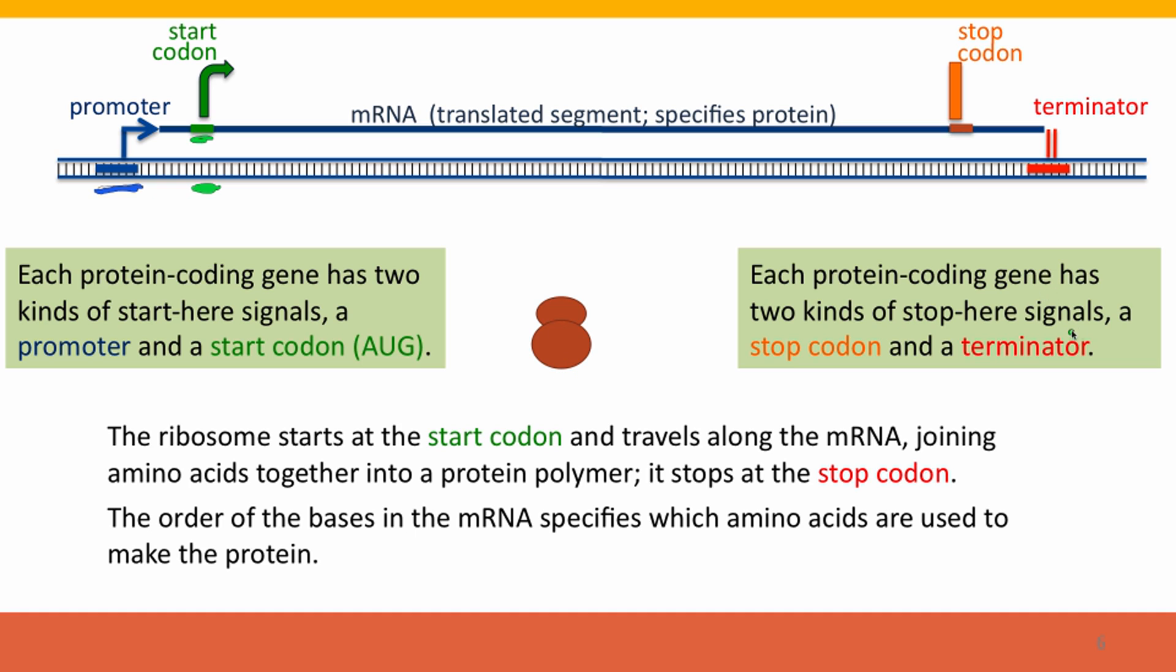There's also two kinds of stop signals. There's the terminator that we already introduced that tells RNA polymerase where to stop. And there's a signal in the RNA, it acts in the RNA, it's recognized by the ribosome, tells the ribosome to stop here, stop making protein. Again, this sequence is coded, it's specified in the DNA, but it acts in the RNA.